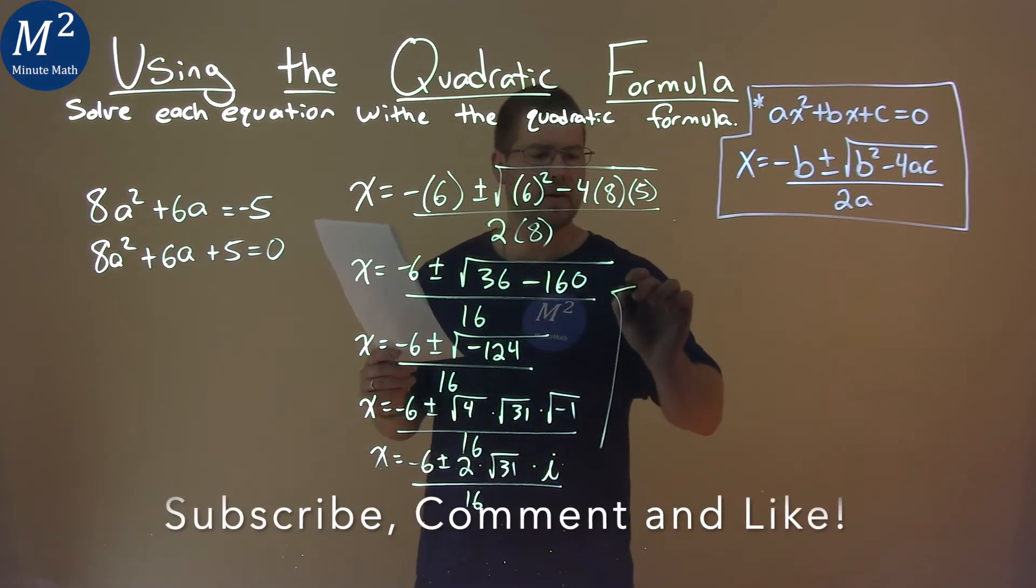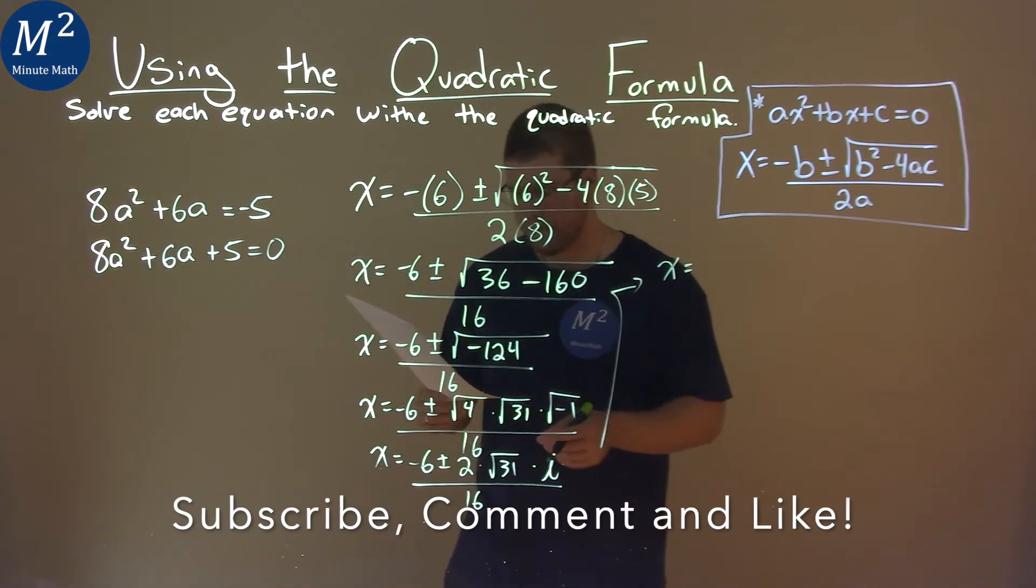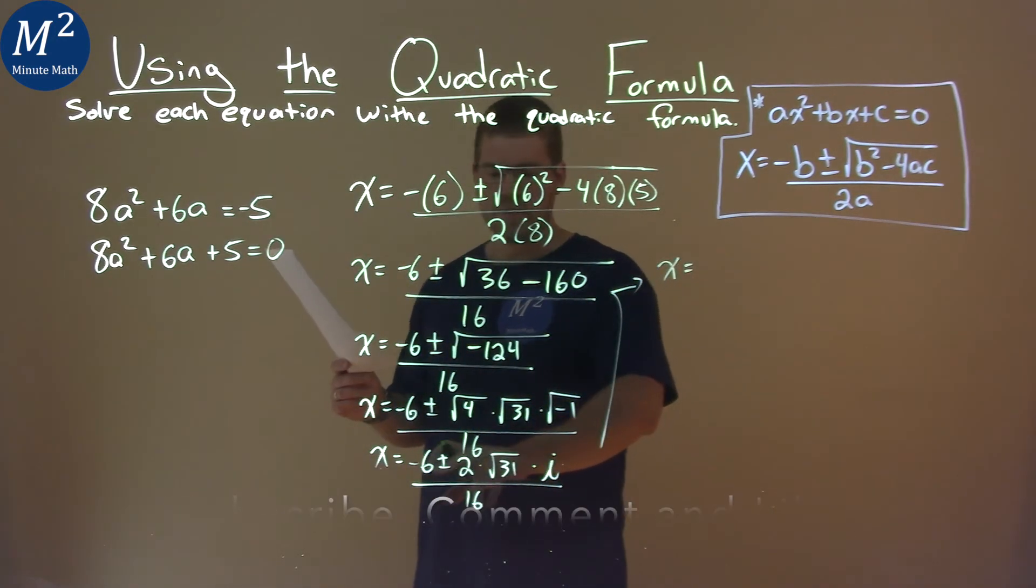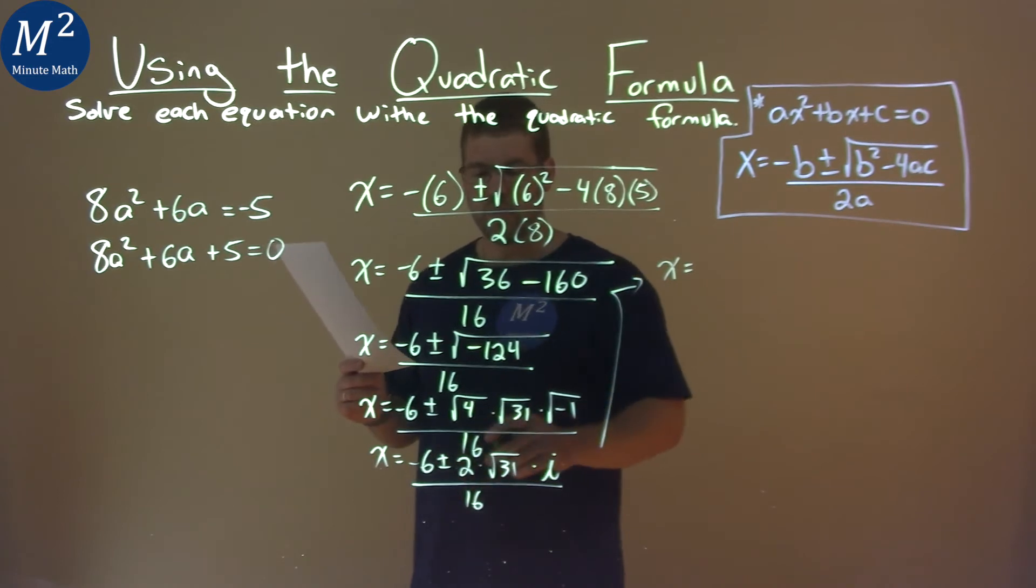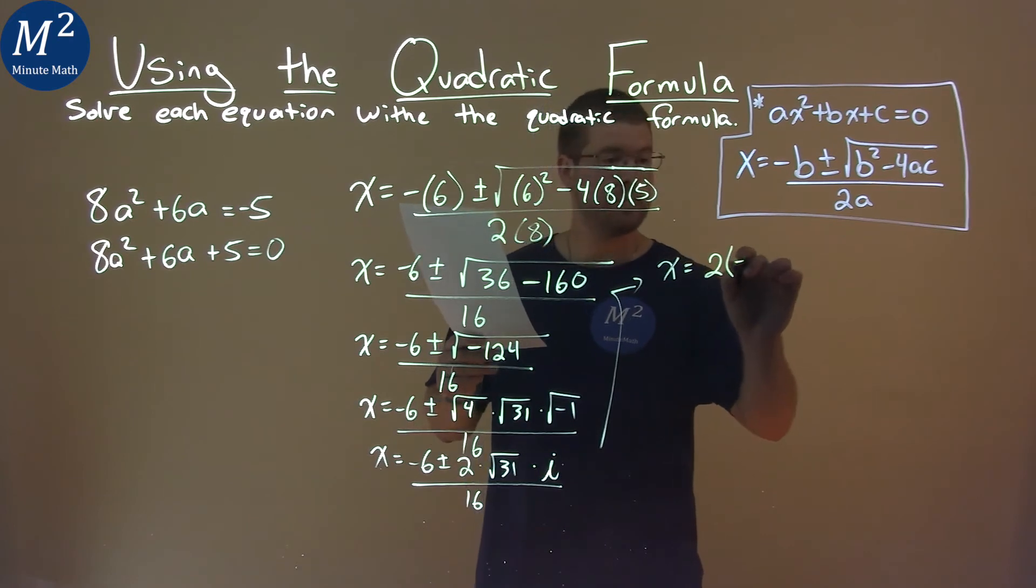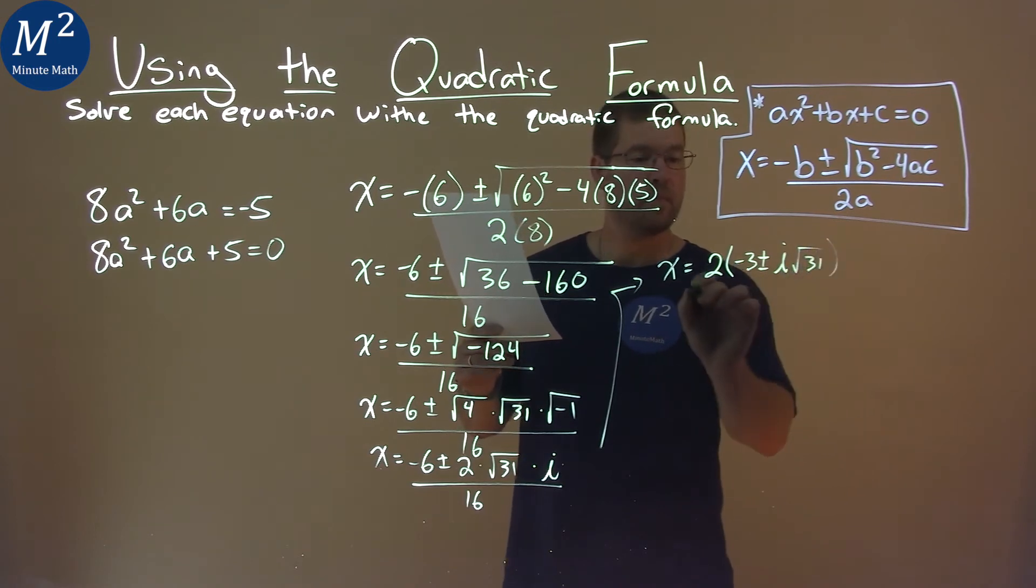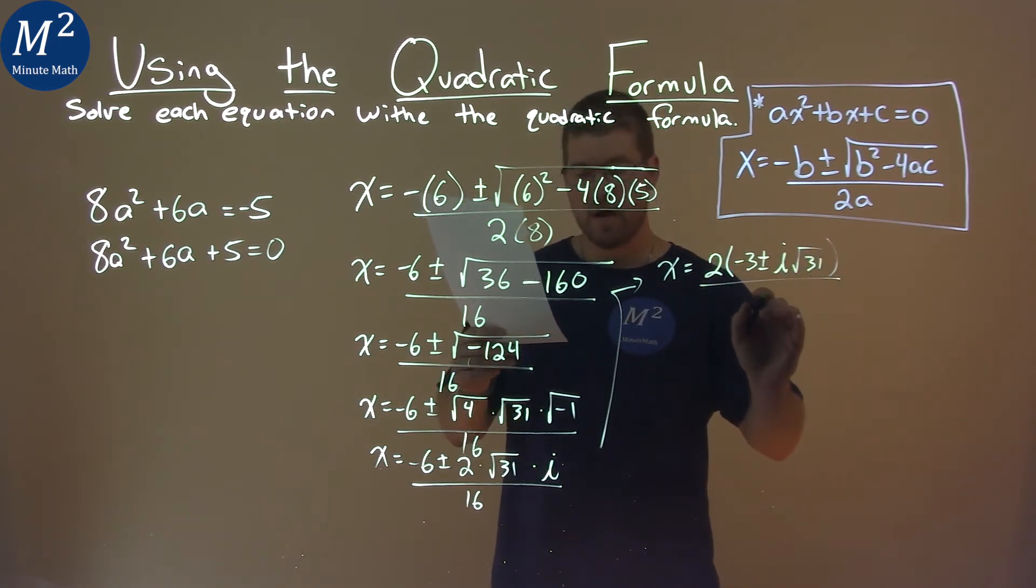So let's go rewrite this here, simplify a little bit, and I'm going to pull a 2 out of the numerator. By pulling a 2 out, I'm left with negative 3 plus or minus, and I put the i in front of the square root of 31 over 16.